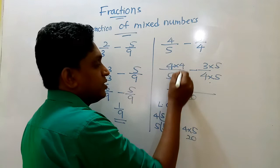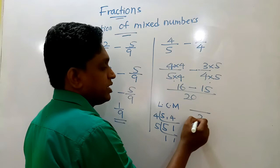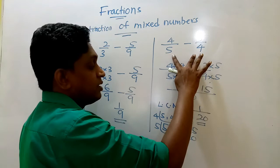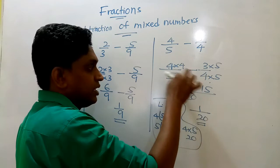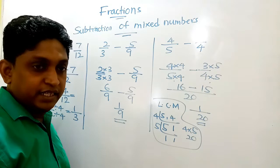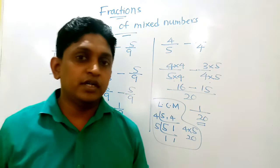4 into 4 is 16, and 3 into 5 is 15. So denominator 20, 16 minus 15 is 1. So when both are unequal, using the LCM knowledge, you can get the common denominator that changes these denominators and you can simplify the numerators. So these are subtraction of proper fractions.